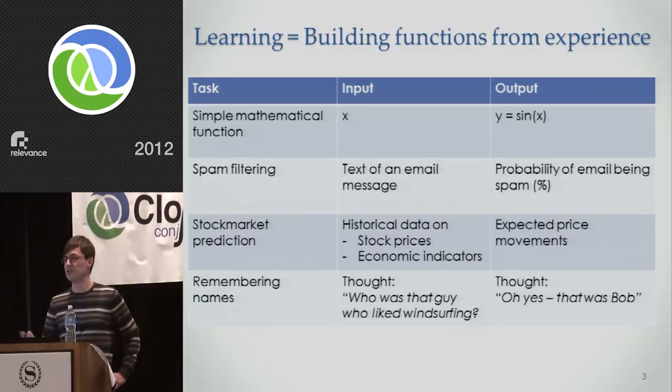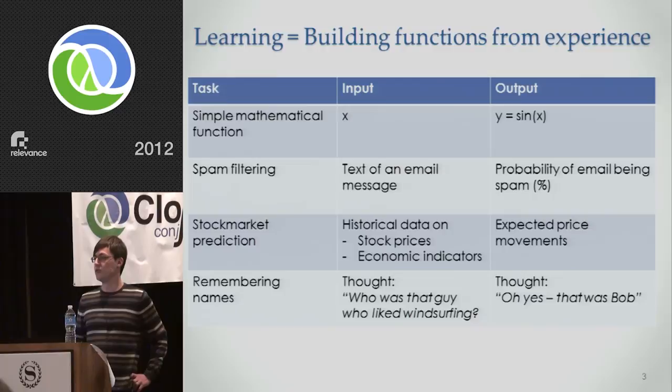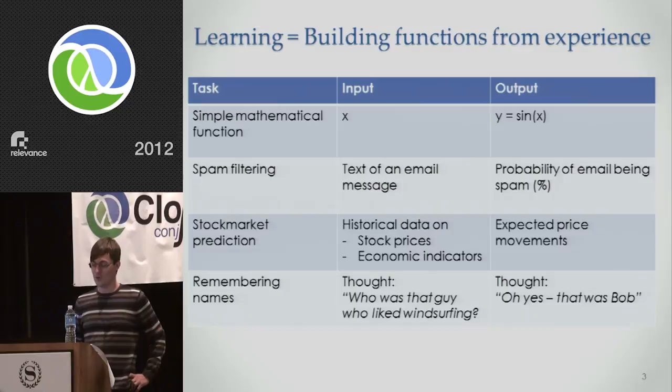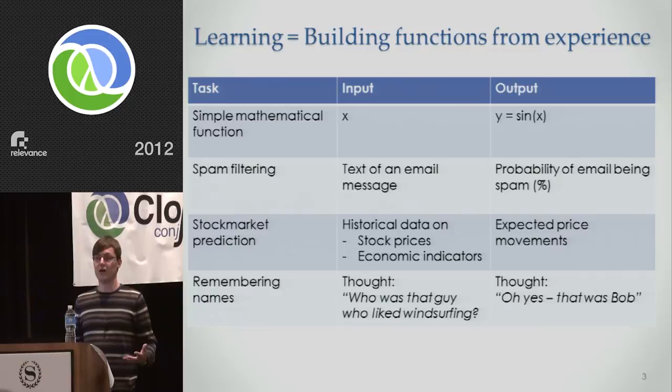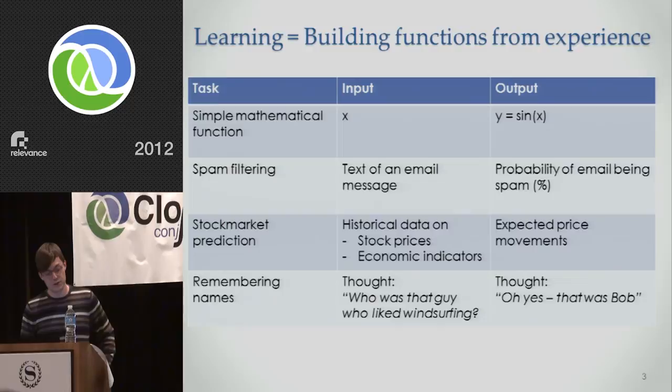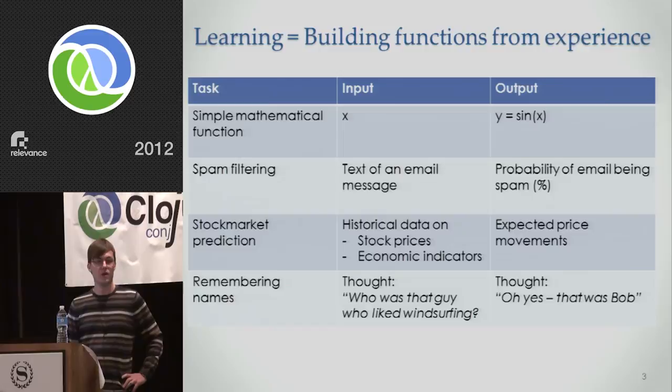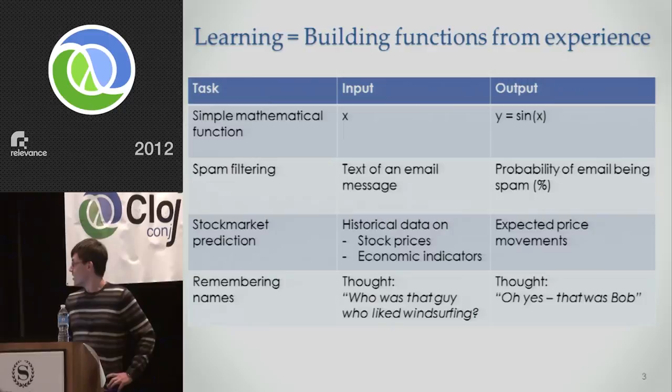It can be a simple mathematical function. You can do spam filtering if you interpret the output as a probability of an email being spam. If you fancy making some money, you can do some stock market prediction. And even human learning can be thought of this way, as long as you think of the input and output as being a thought, a state of mind. So the machine learning problem basically boils down to taking experience in the form of empirical data and running through an algorithm that automatically generates a function that embodies this knowledge.